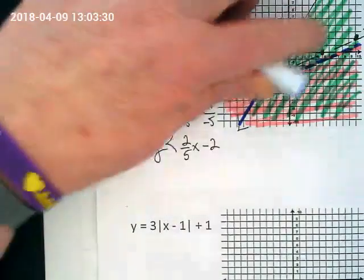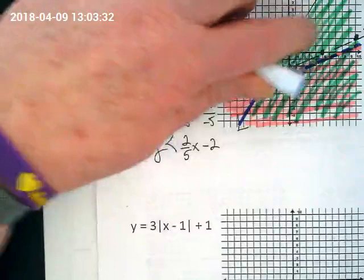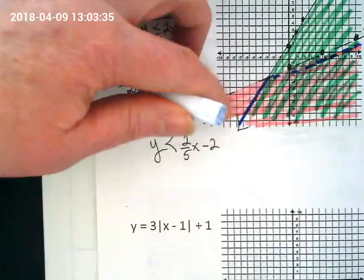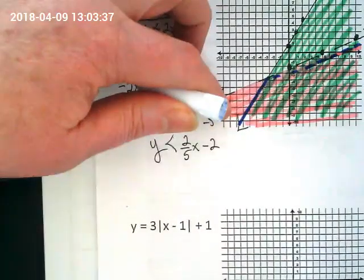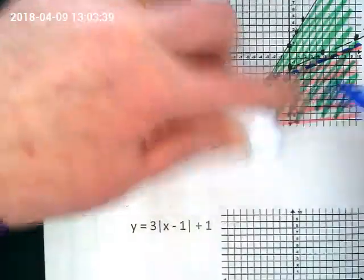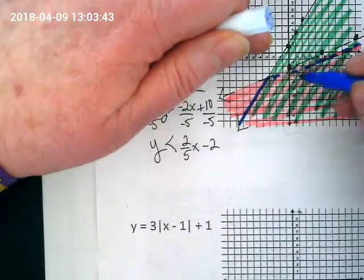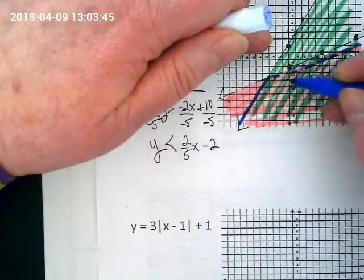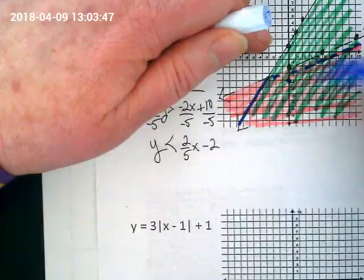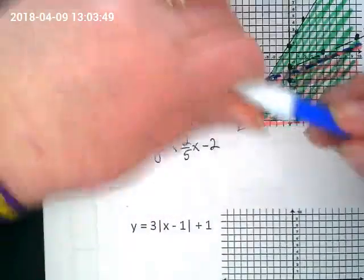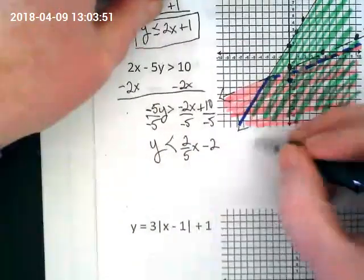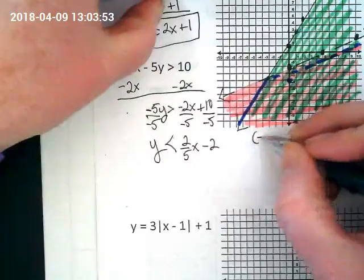Anything that is in this section is an answer to our system of inequalities. Not the section I have shaded just green, because that's only true for one of the lines, and not where it's pink, because that's only true for the other line. But in this double shaded area, I can pick any point. I'm going to pick negative 4, 0. And I want you guys to do this with me. We're just picking a random point that's in the double section.